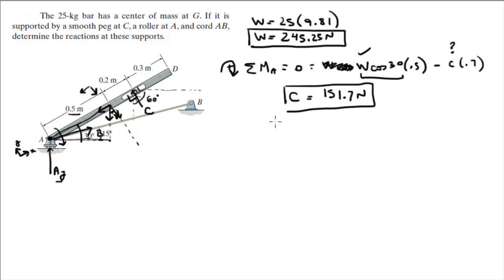So, now that we have C, now we've got to find A_Y and B. It becomes very easy. So, sum of the forces in the X is equal to 0, because you know A_Y only affects the Y, because it only goes up. So, B_X minus C cosine of 60 is equal to 0. We got C.